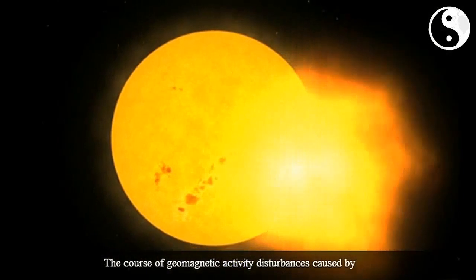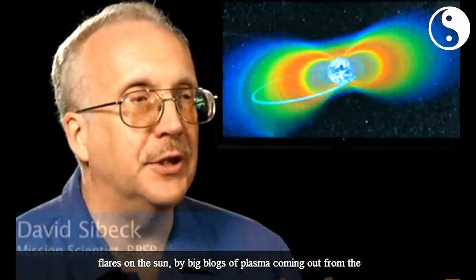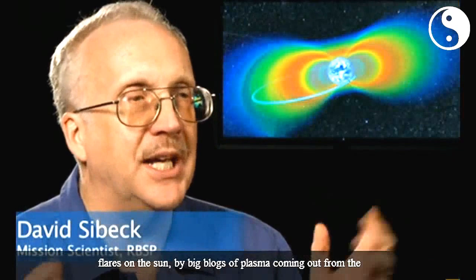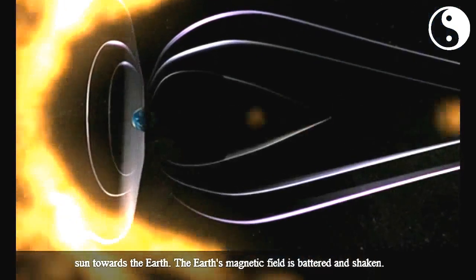During the course of geomagnetic activity, disturbances caused by flares on the sun, by big blobs of plasma coming out from the sun towards the Earth, the Earth's magnetic field is battered and shaken.